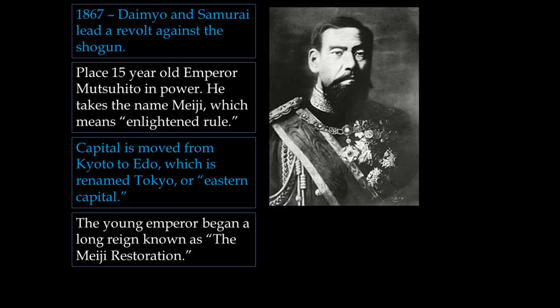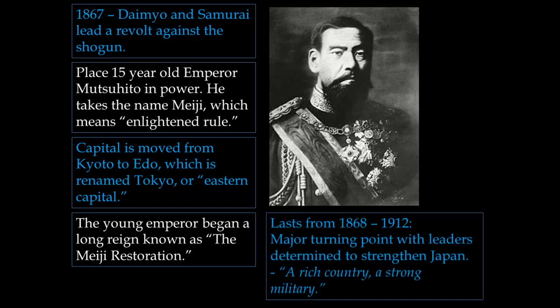The young emperor began his long reign, known as the Meiji Restoration, lasting from 1868 to 1912. He and other leaders of the reformation adopted the motto: 'A rich country, a strong military.' The first thing they needed to do was replace the feudal system with a new government and revamp the economy, replacing it with an industrialized one.